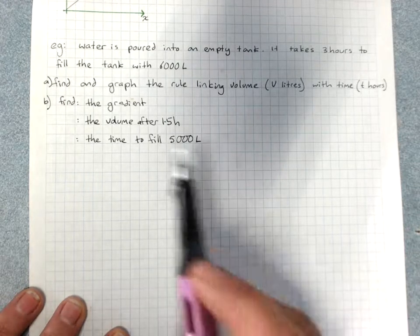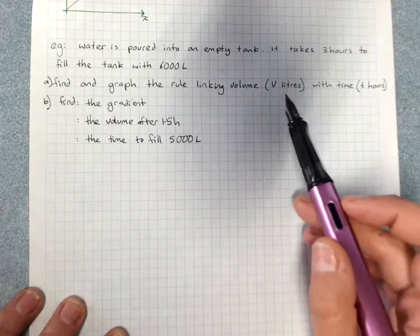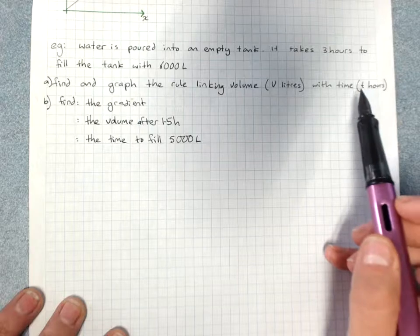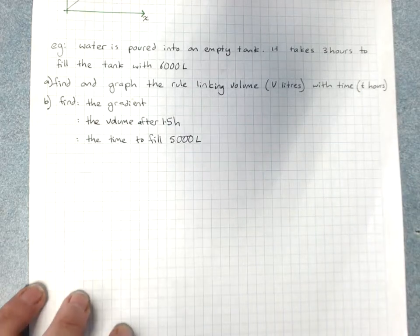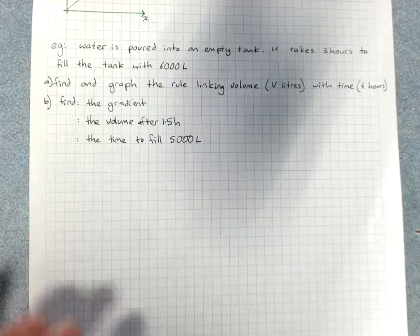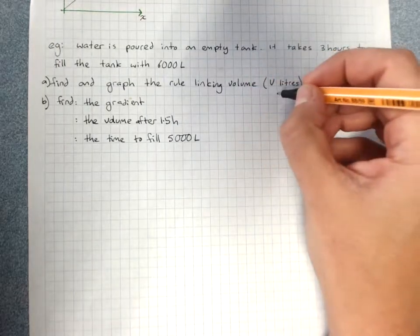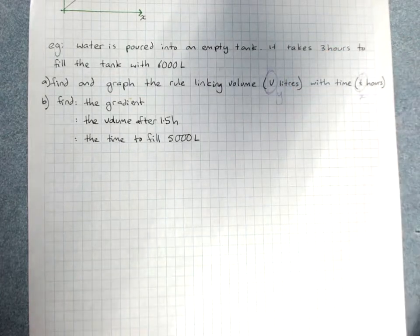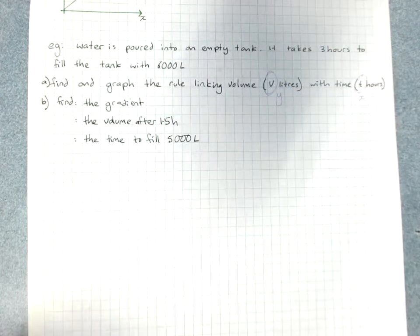Find the graph linking the rule of volume V with time T. Of course, this then gives us our x and y. So volume is our y, but we're using V. Time is our x, but we're using T.